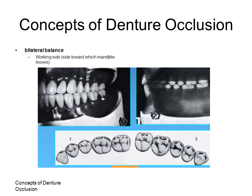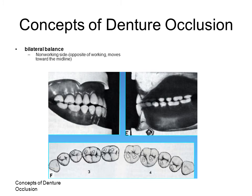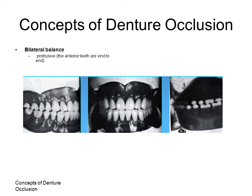The working side movement refers to the side towards which the mandible moves. The slide illustrates the contacts of non-working side teeth in bilateral balanced articulation. The slide also illustrates the protrusive relationship of teeth in bilateral balanced occlusion, where the anterior teeth are in brushing contact.